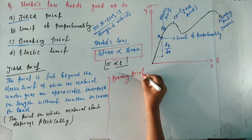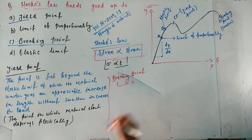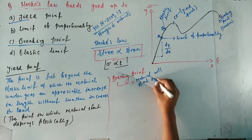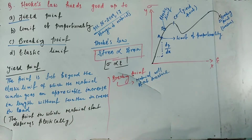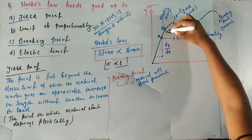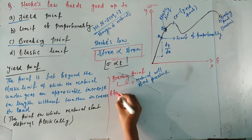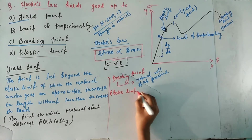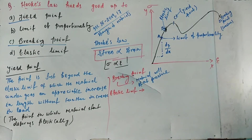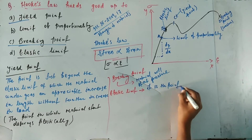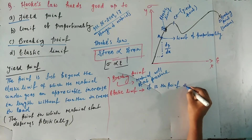Next, option C — breaking point. The breaking point is the point where the material starts to fracture completely. This is where the material will completely deform or break. So breaking point is also not the correct answer for Hooke's law.